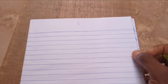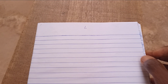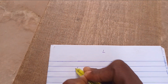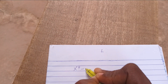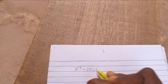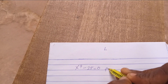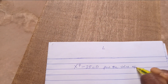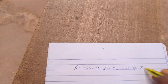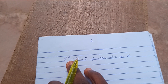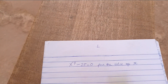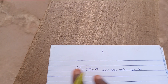Hello viewers, welcome to my YouTube channel once again. Today we shall take a good look at this question. We have x to the power 4 minus 25 equals zero — find the value of x. Let's try to solve this expression.